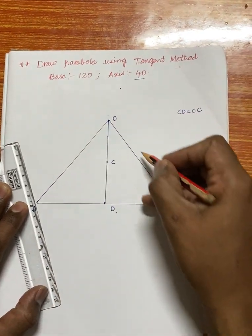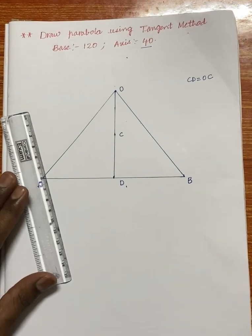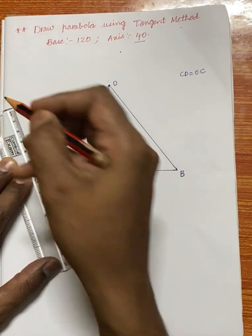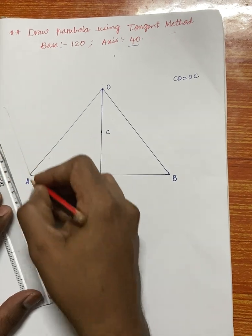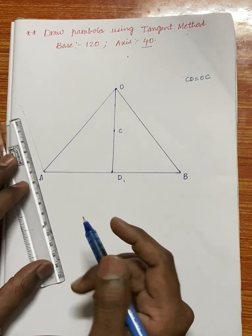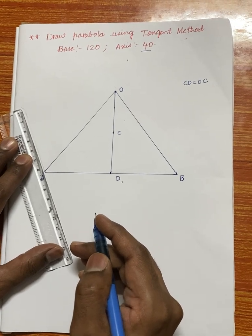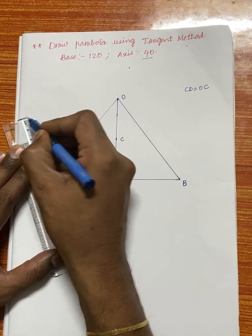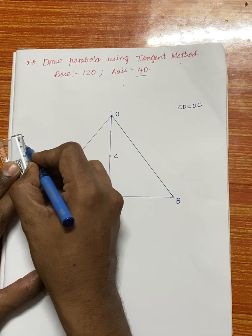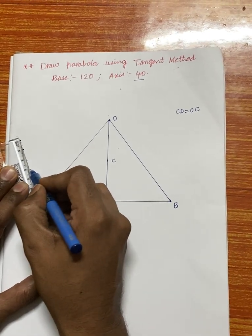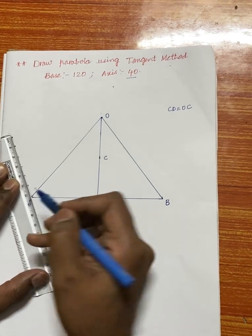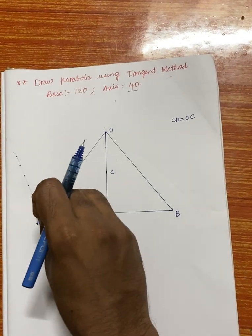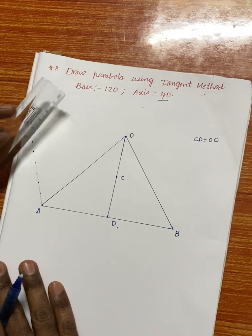Now divide line AO as well as line OB into equal number of divisions. From A, take any angle and divide the line into equal divisions — I am taking one centimeter per division, giving divisions one through six. You can make any number of divisions by adjusting your compass and stepping off equal intervals.